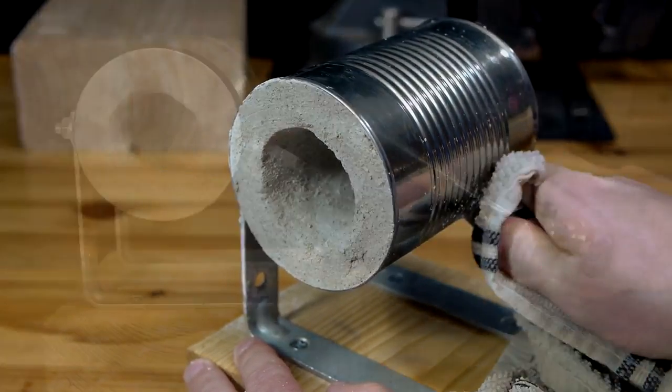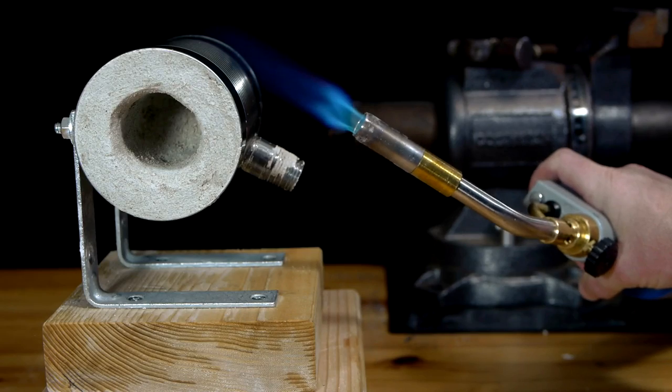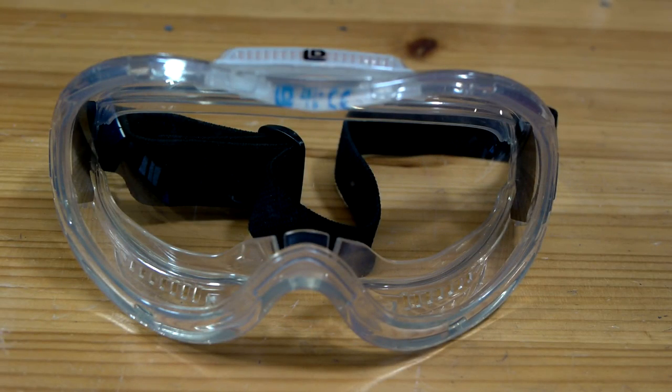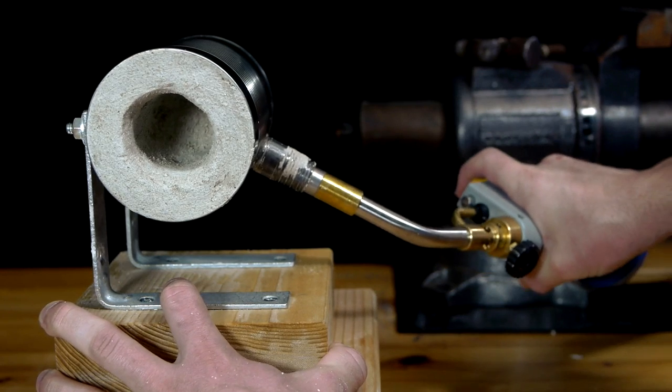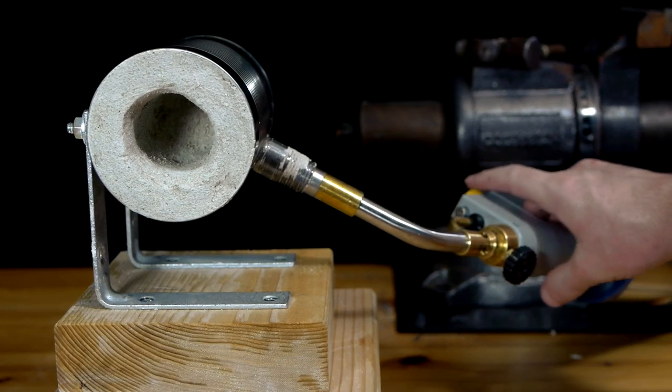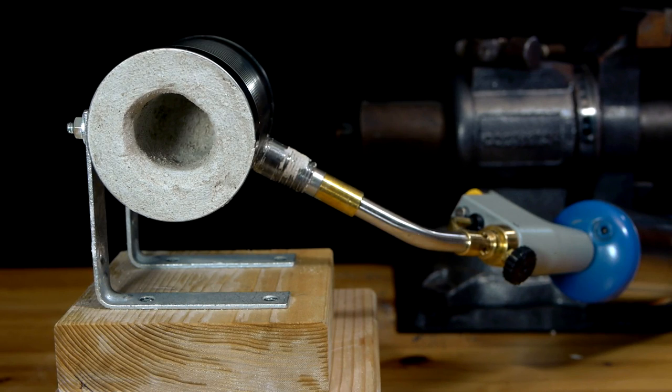The forge is now complete, and the first burn will fully cure the plaster. Safety goggles are a must before starting. A spiral flame torch head will work best in this forge. The tip is inserted into the iron pipe until secured.